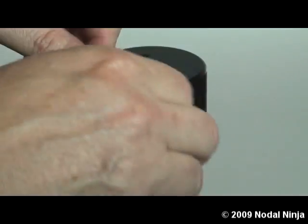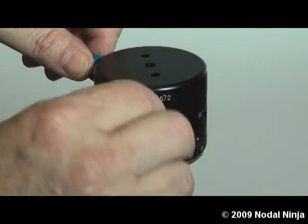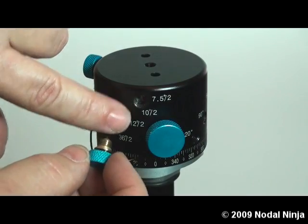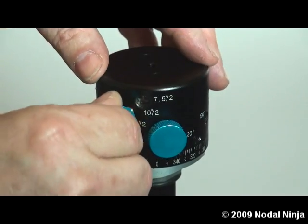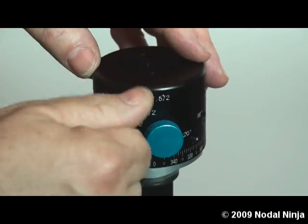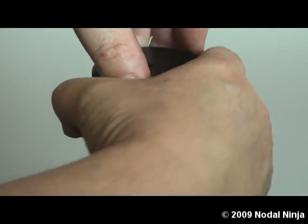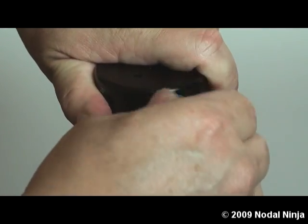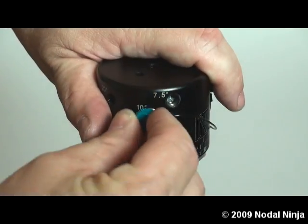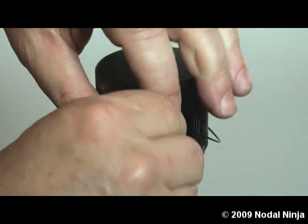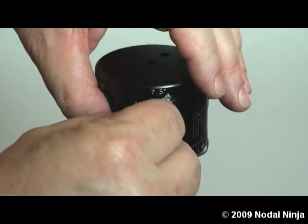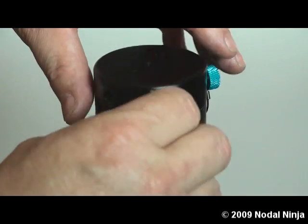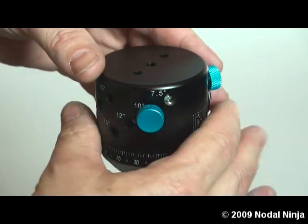If we took each of the blue knobs and we put them in the 10 divided by 2 hole, this will give us one click stop every 5 degrees.